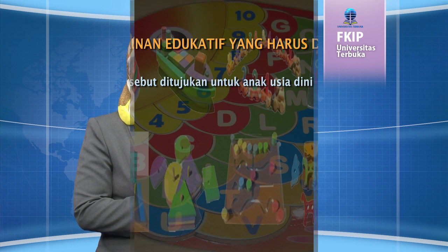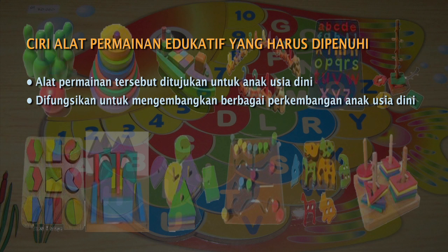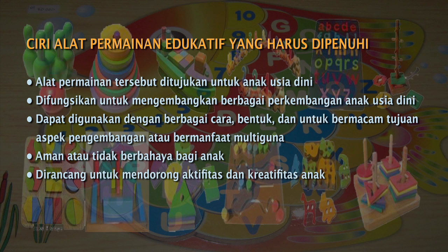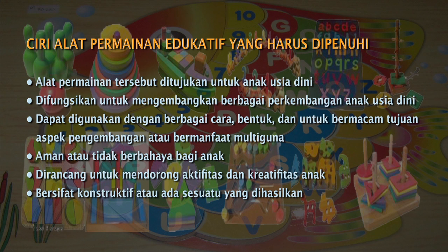Untuk dapat memahami apakah suatu alat permainan dapat dikategorikan sebagai alat permainan edukatif untuk anak usia dini, beberapa ciri yang harus diperhatikan yaitu: pertama, ditujukan untuk anak usia dini; kedua, difungsikan untuk mengembangkan berbagai perkembangan anak usia dini; ketiga, dapat digunakan dengan berbagai cara, bentuk, dan untuk bermacam tujuan atau bermanfaat multiguna. Selanjutnya, alat permainan tersebut aman atau tidak berbahaya bagi anak, dirancang untuk mendorong aktivitas dan kreativitas anak, bersifat konstruktif, mengandung nilai pendidikan, dan difungsikan untuk mengembangkan berbagai aspek perkembangan anak usia dini.